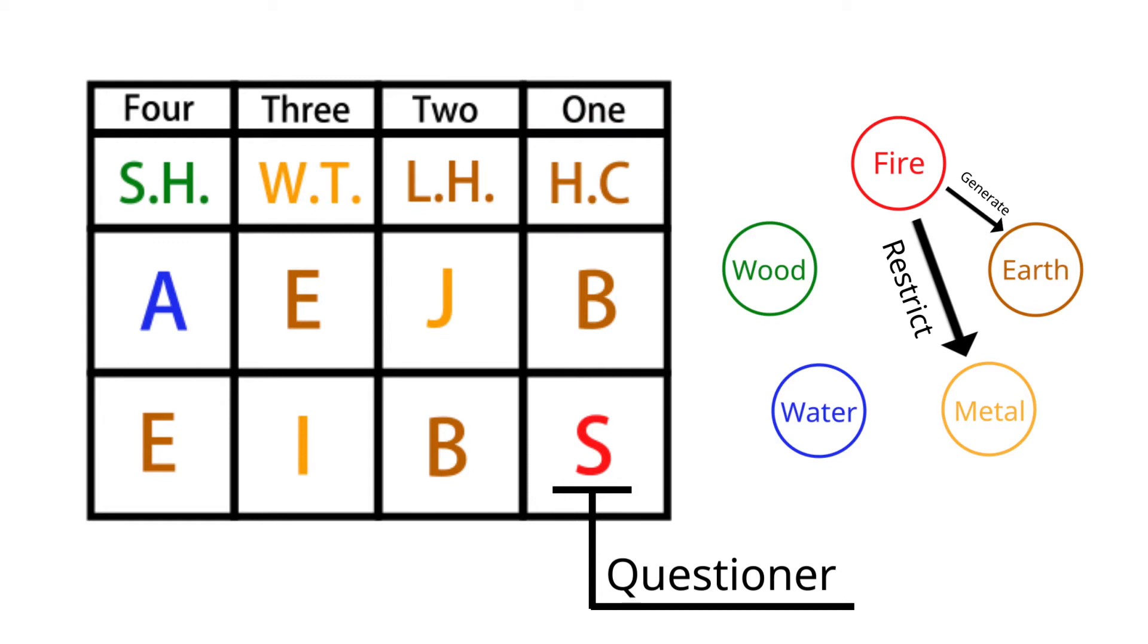Why does she often work overtime? Let's take a look at the top of B. It's HC. HC represents competition. But she is clearly only a grassroots employee. She only needs to do her own job. Why is there competition? Let's take a look at the J on the left of B. The top of J is LH. LH represents powerful people and influential people. So, J and LH together represent her leader. Fire restricts gold. So, S restricts J. Questioner S restricted her leader J. What does that mean? She has conflicts with her leader. The grassroots employee has conflicts with her leader. How could her life be easier?